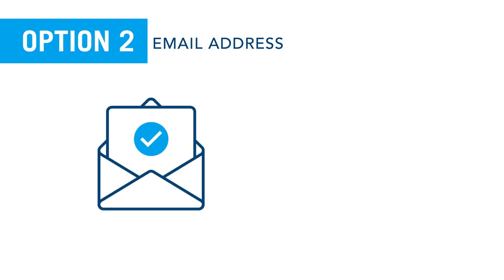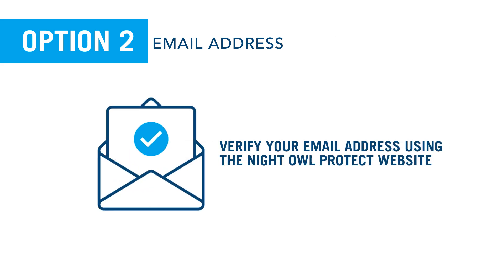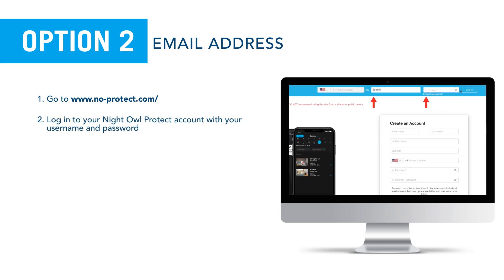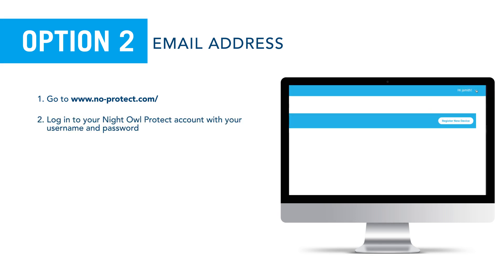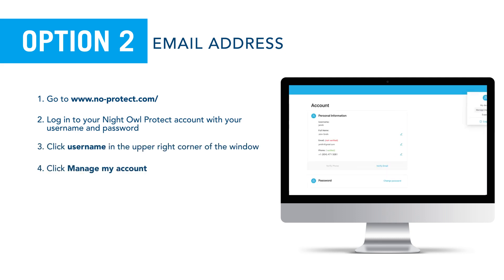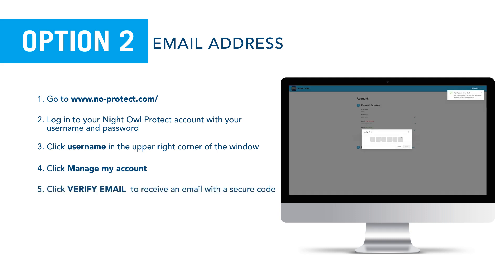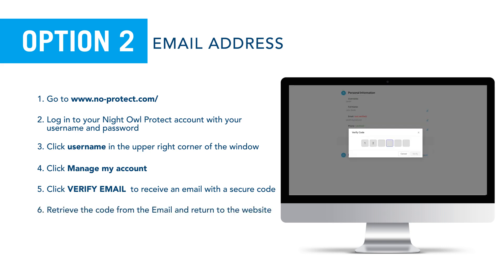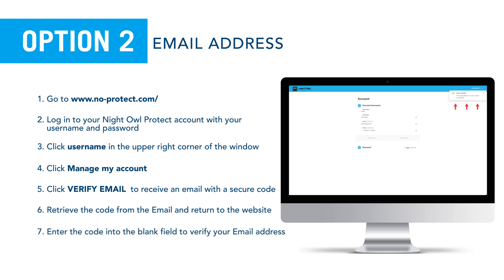The following steps show you how to verify your email address using the Night Owl Protect website. Go to www.no-protect.com. Log into your Night Owl Protect account with your username and password. Click username in the upper right corner of the window. Click manage my account. Click verify to receive an email with a secure code. Retrieve the code from the email and return to the website. Enter the code into the blank field to verify your email address.